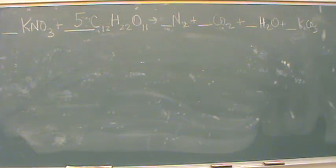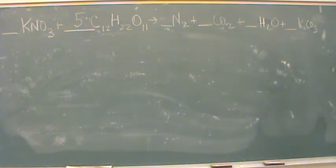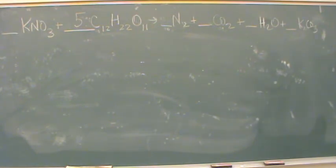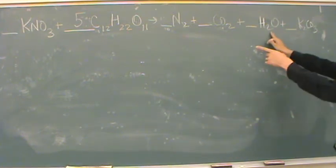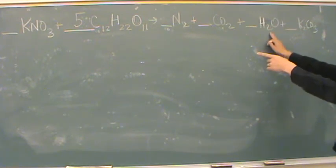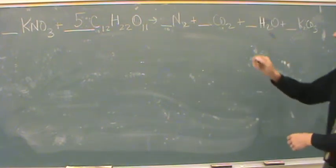It's a tough one, for sure. I gave you one of the numbers — the five — and we just need to make our way through. Okay, so carbon, it looks like it appears twice. Hydrogen only appears here and there, right? Okay, let's start there. That's a good place.